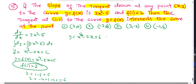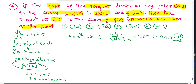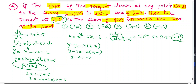The slope at (1, 2): dy/dx = 3(1)² - 5 = -2. Equation of tangent at (1, 2): y - 2 = -2(x - 1), giving y - 2 = -2x + 2, so y + 2x = 4.